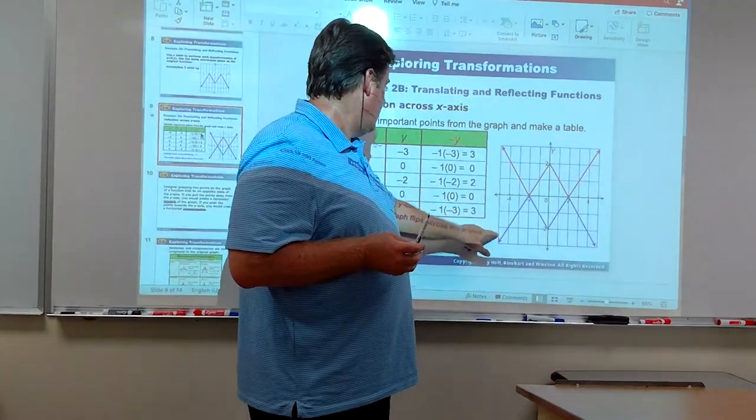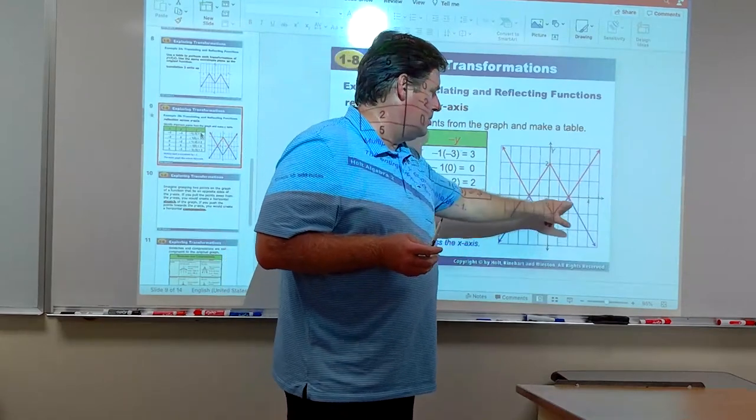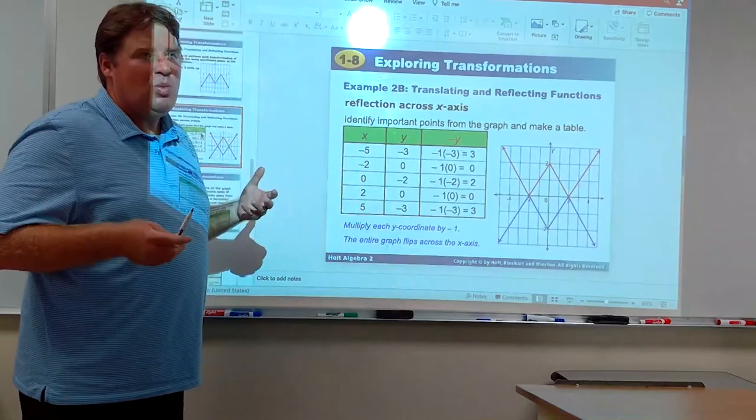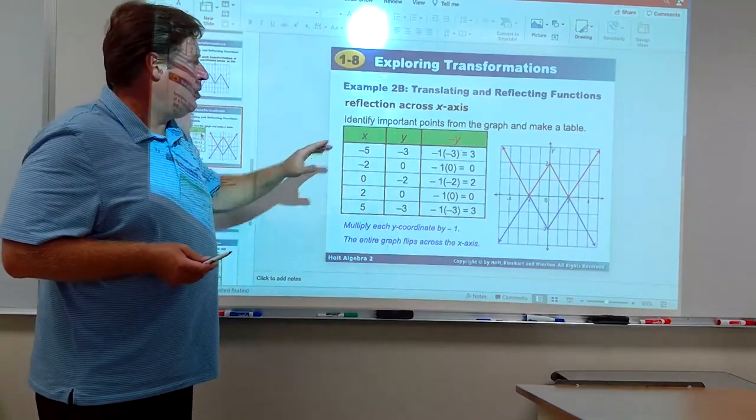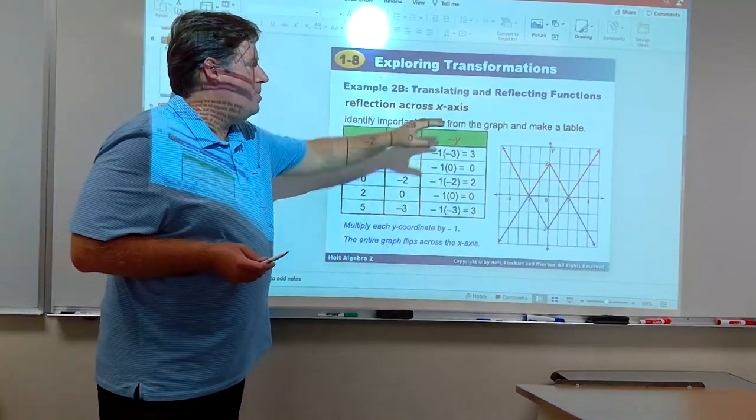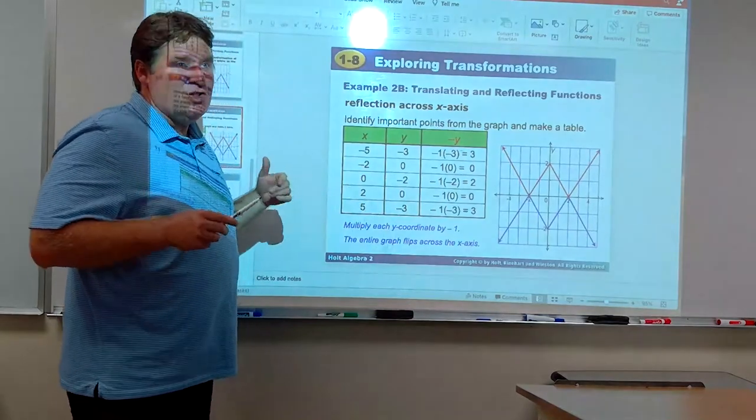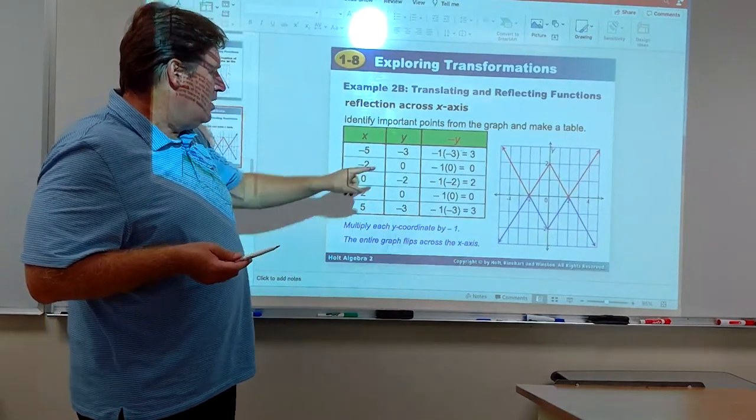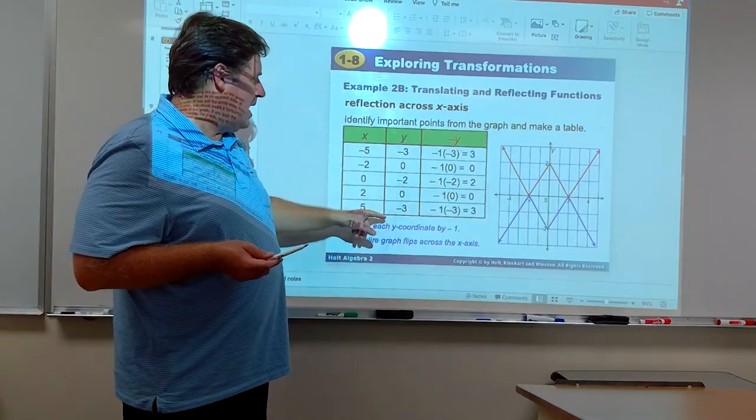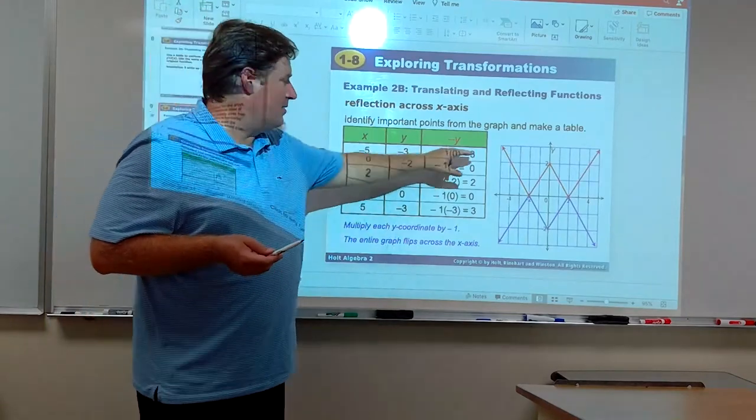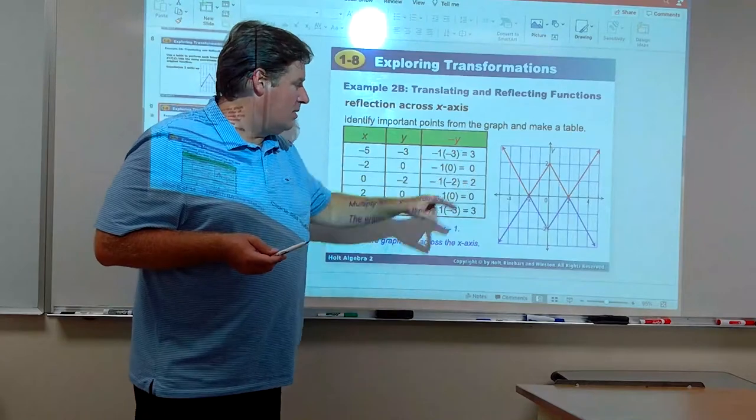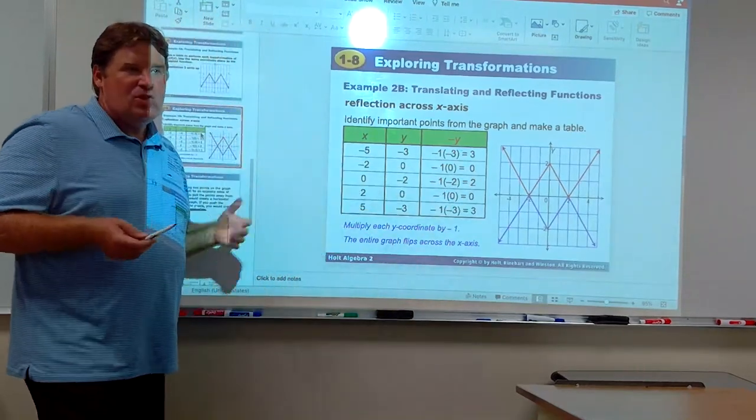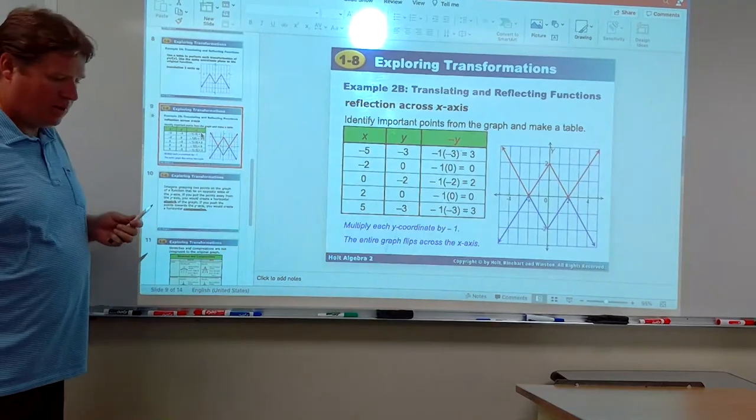These points here, (-5, -3), that's that point. (-2, 0), (0, -2), (2, 0). Five points is good. Just show me where the point would go to. If we're going to reflect across the x-axis, remember, what we do is we change the y to its opposite. So, just go through here and change these y's to the opposite. Now, you've got your new points: (-5, 3), (-2, 0), and the rest of them there. You can just do that with a table. I think that works out just as well.